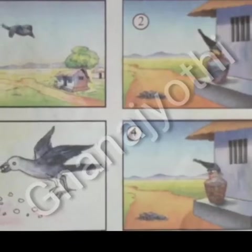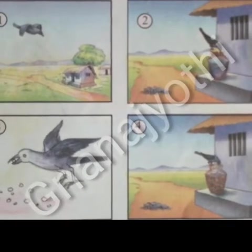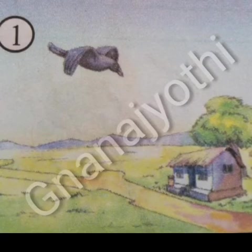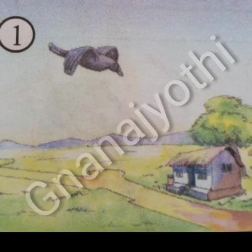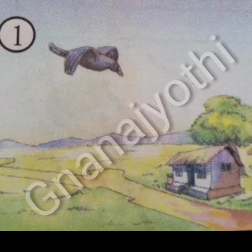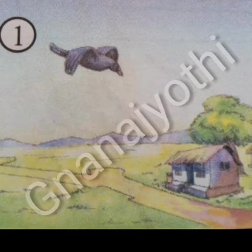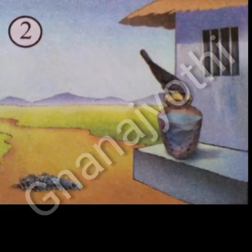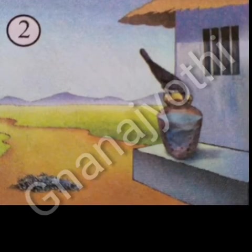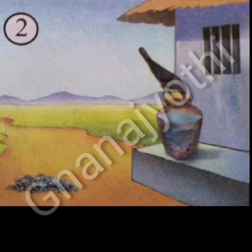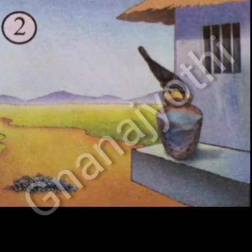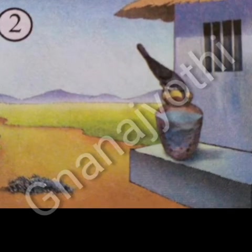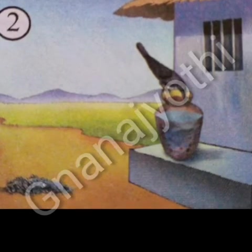Observe these pictures, children. Why is the crow doing this? One day there was a crow which was very thirsty. He searched for water everywhere. At last he saw a water pot near a house. He looked inside the pot. There was very little water in the pot. The crow saw some stones nearby.